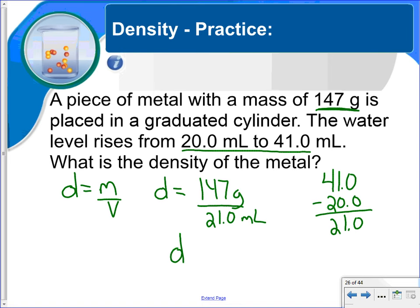And when you divide 147 by 21, you get 7.00 grams per milliliter. Paying attention to this has three sig figs, this has three sig figs, so the answer needs three significant figures.